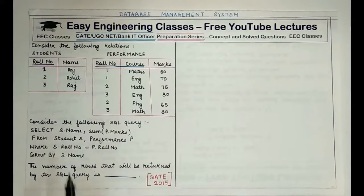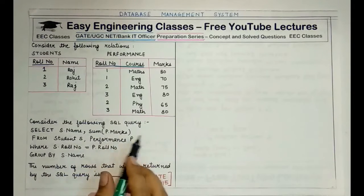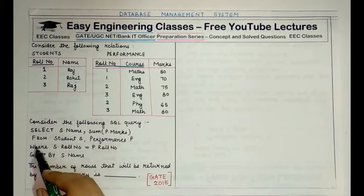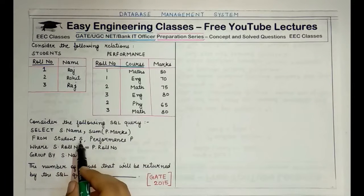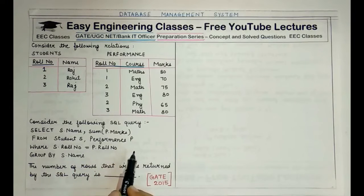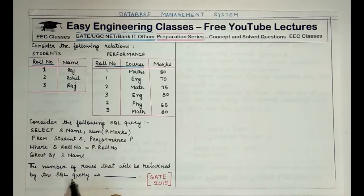Now the question is: consider the following SQL query — SELECT s.name, SUM(p.marks) FROM Students s, Performance p WHERE s.role_number = p.role_number GROUP BY s.name. The question asks how many rows will be returned by this SQL query.